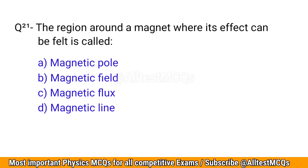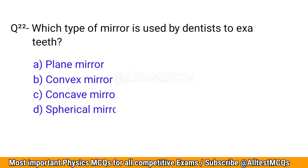Q21. The region around a magnet where its effect can be felt is called? The correct option is B: Magnetic field.